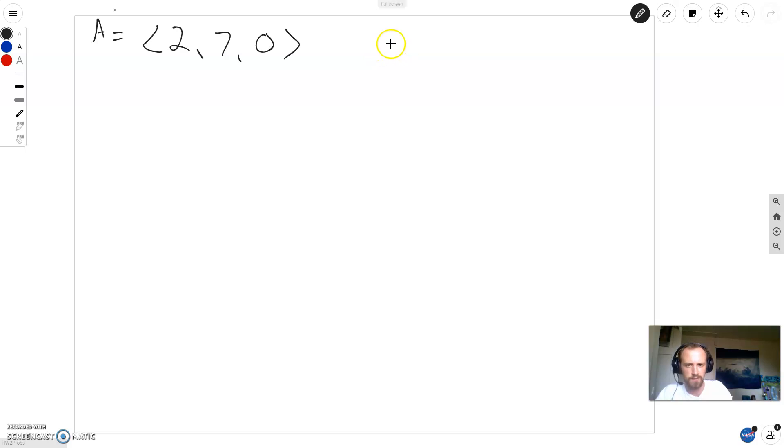You do pretty much the same procedures that you would in two dimensions. And vector B equals 3i hat minus 4j hat minus 1k hat. If you've been watching my videos, then you know I prefer this notation. It lets me see each of the components very quickly.